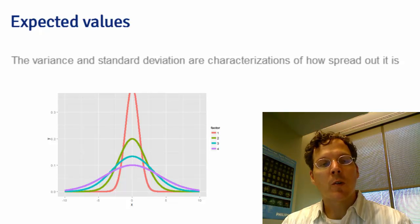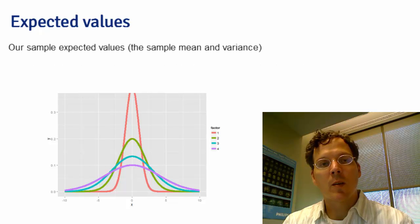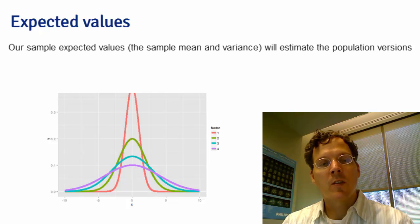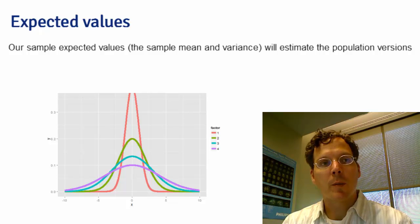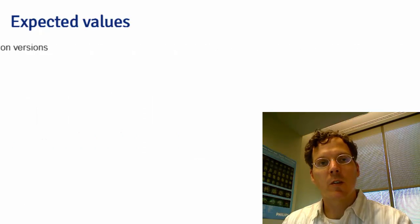Just like before, in the way that the sample quantiles estimated the population quantiles, the sample expected values are going to estimate the population expected values. So the sample mean will be an estimate of our population mean, and our sample variance will be an estimate of our population variance, and our sample standard deviation will be an estimate of our population standard deviation.